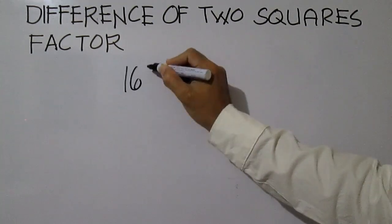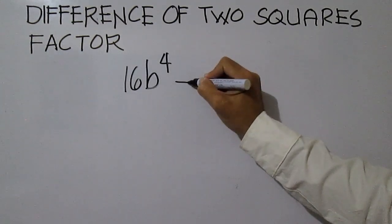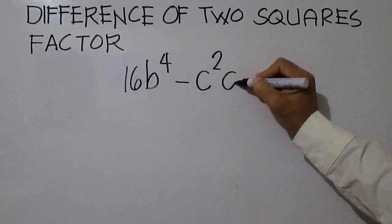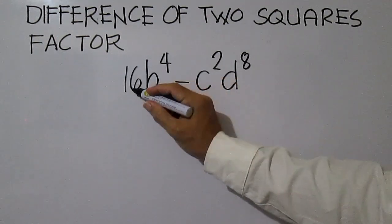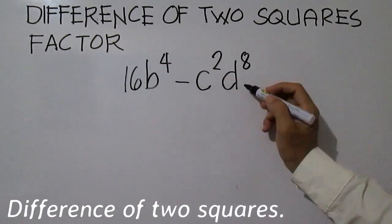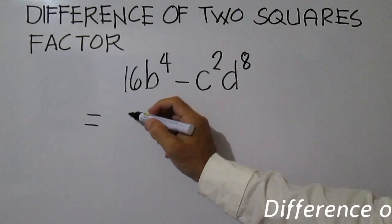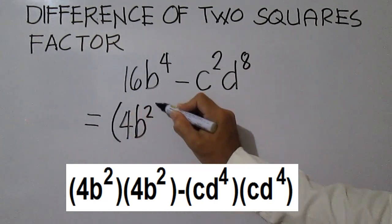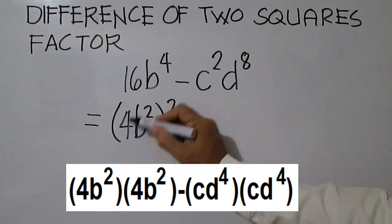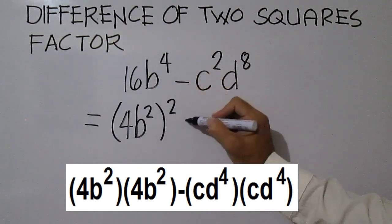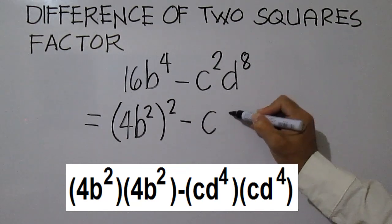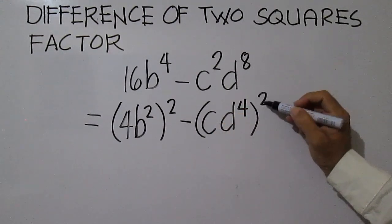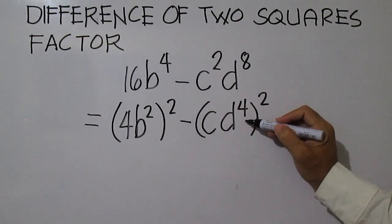Factor 16b to the power of 4 minus c squared, d to the power of 8. To factor, rewrite this in the form difference of two squares. 16b to the power of 4 can be written as 4b squared, quantity squared — because 4 times 4 is 16, and b squared times b squared is b to the power of 4 — minus c times d to the power of 4, quantity squared, since c times c is c squared and d to the power of 4 times d to the power of 4 is d to the power of 8.